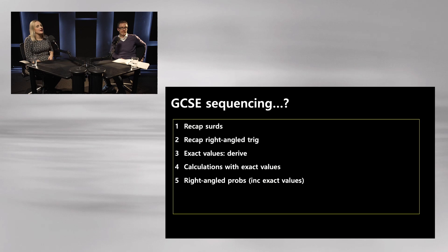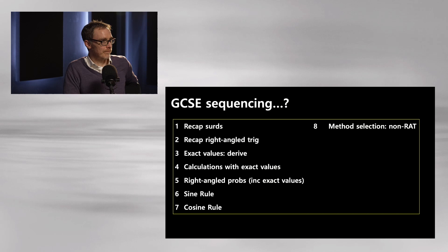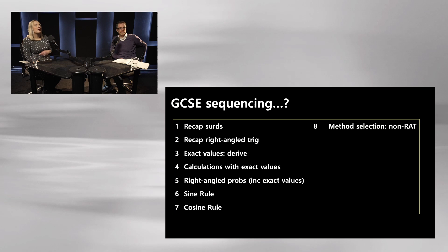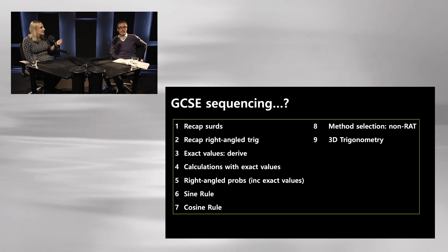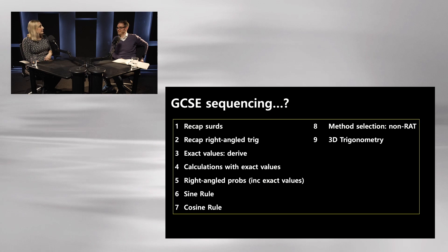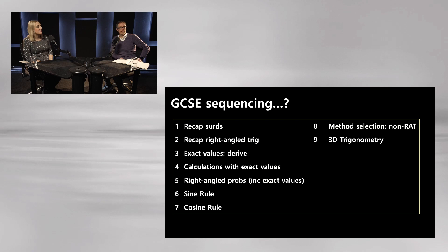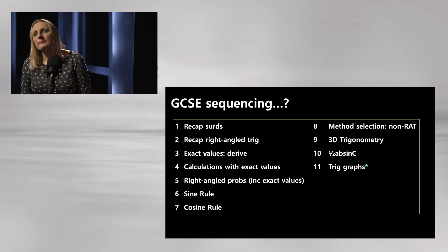Then we can get on with sine rule and cosine rule — I've put one lesson each, but you might want two. Then method selection: is it sine rule or cosine rule? Then 3D trigonometry. But throughout lessons six through nine you can bring your exact trig values in. You can model an example: we're doing sine rule, here's a sine rule question with sin 30 in it. Once you've introduced exact values, you can bring them through the rest of your trig teaching — half AB sin C with a non-calculator example.